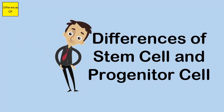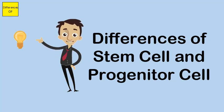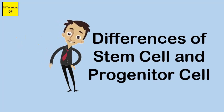There are four main types of stem cells: adult or somatic stem cells, fetal stem cells, embryonic stem cells, and induced stem cells.